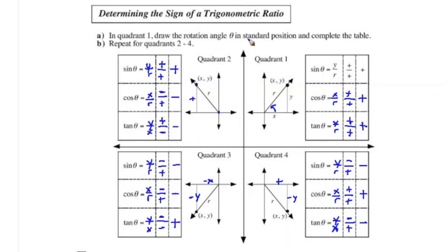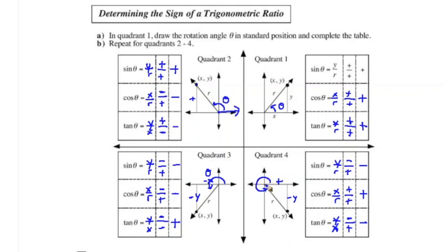We're also asked to draw the angle in standard position. Remember that in standard position you start from the positive x-axis. So the angle is measured from the positive x-axis going counterclockwise around to the terminal arm position in each quadrant.